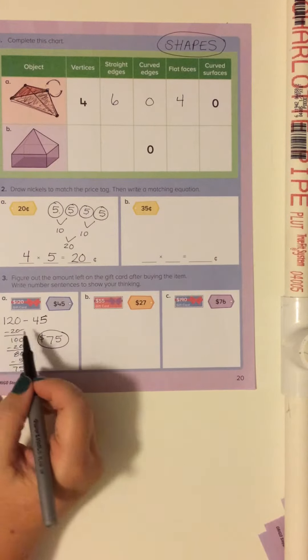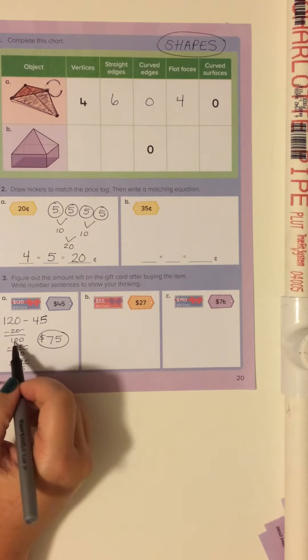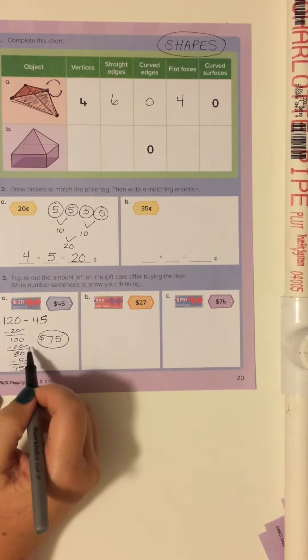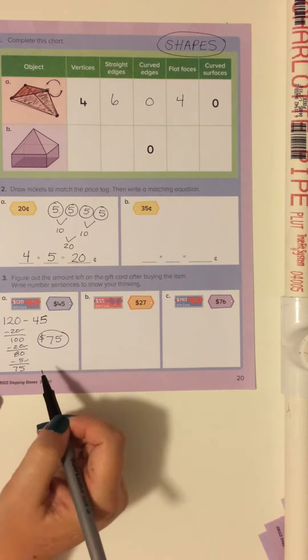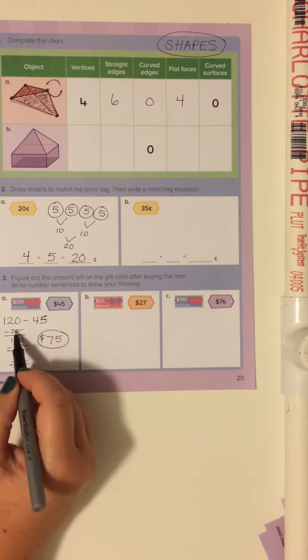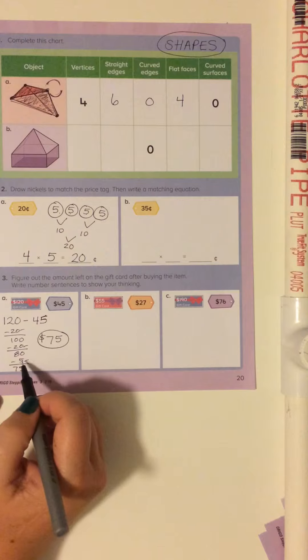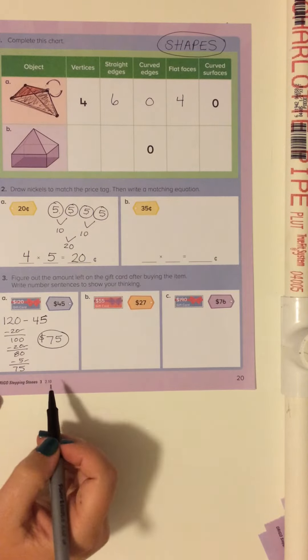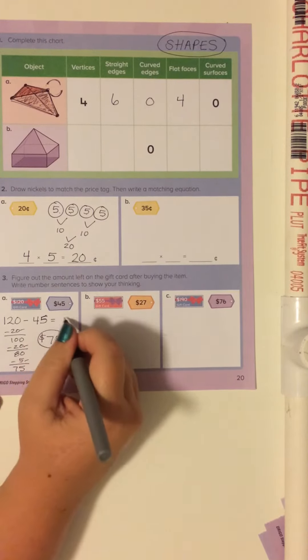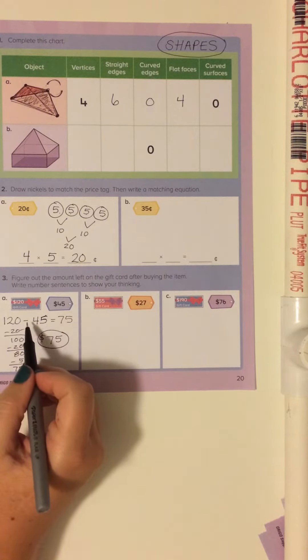So first, to mental math, I'm going to take away 20 so I can get to a hundred. Then from a hundred I'm going to take away another 20 to get 80. And then I've already subtracted 20 and 40, and I had to subtract 45, so I'm going to subtract five more to get a total of 75.